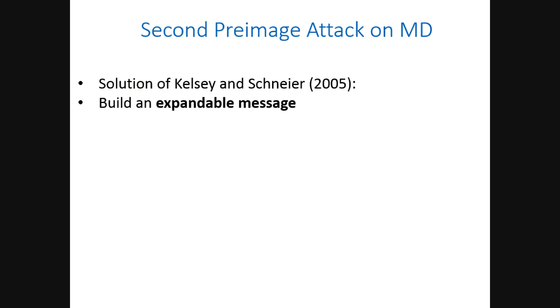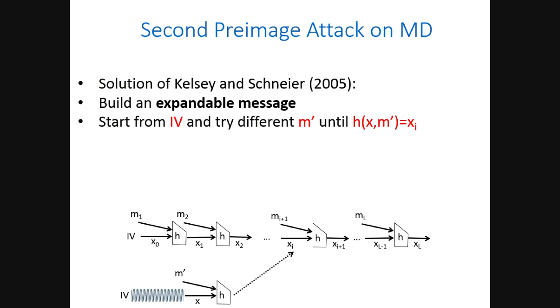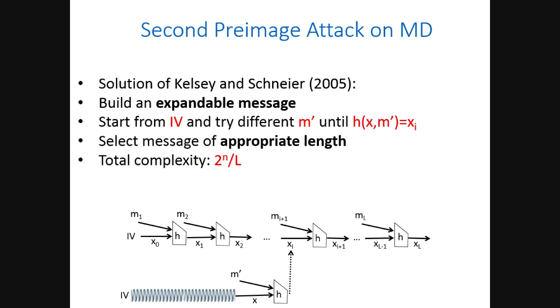To solve this, Kelsey and Schneier built what is known as an expandable message, visualized like a spring. Starting from the IV, the spring ends at some state x; once a target is hit, the spring can expand to produce two messages that are different, have the same length, and have the same output. The total complexity is about 2^n/l.